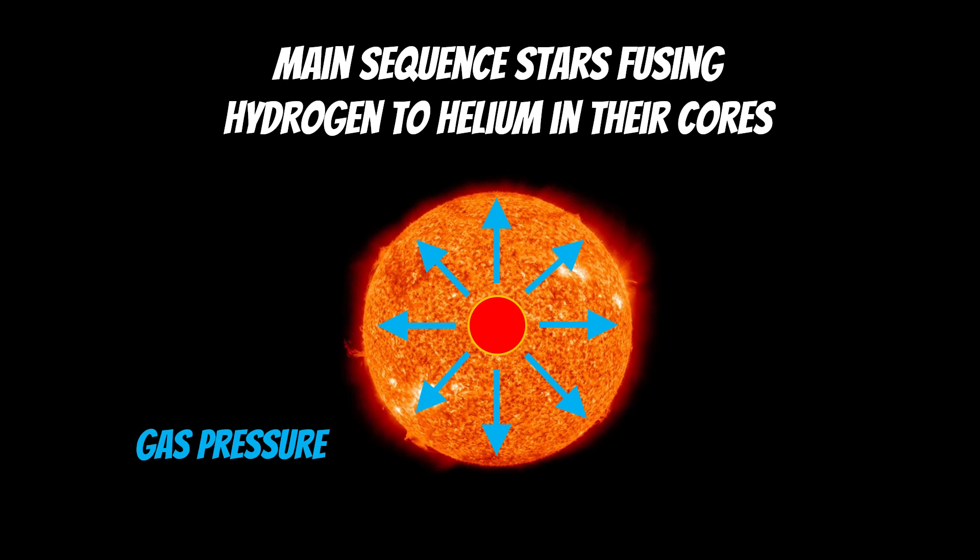Now when it's doing that, it's obviously generating energy in its core. That energy and the photons there need to make their way out to the outer edge, and that in turn causes an outward pressure—or essentially a gas pressure—and that goes outward from the star.